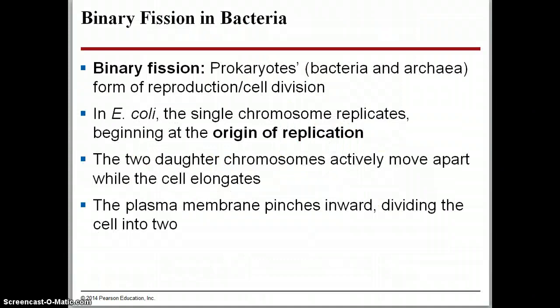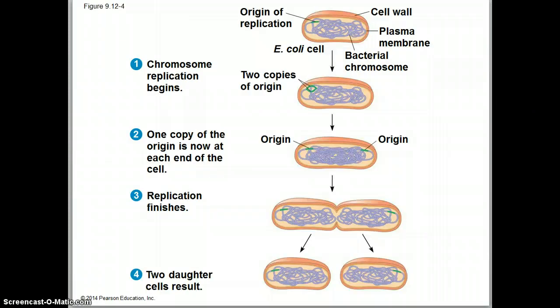Bacteria are a little bit different. What I just walked you through was how eukaryotic cells divide — eukaryotic cells have that nucleus they need to account for, so it's quite a bit more complicated. In bacteria, binary fission is going to take place. This is the form of cell division and reproduction. In E. coli, for instance, they have a single chromosome and a lot less DNA to work with, and that needs to first be replicated. Then the cells are going to elongate, making sure that the chromosomes make it to opposite ends of the cell, and then the plasma membrane will pinch off and divide into two cells.